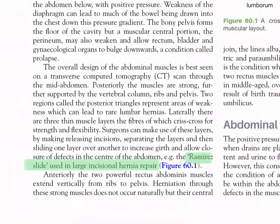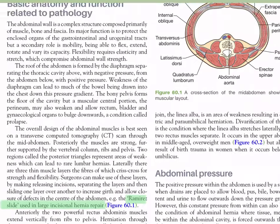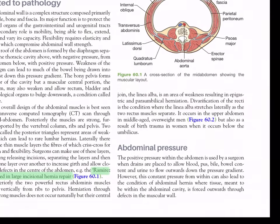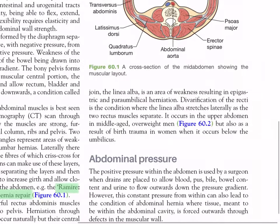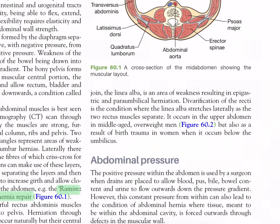In the center of the abdomen — for example the Ramirez slide used in large incisional hernia repair — anteriorly the two powerful rectus abdominis muscles extend vertically from ribs to pelvis. Herniation through these strong muscles does not occur naturally, but their central joint, the linea alba, is an area of weakness resulting in epigastric and paraumbilical hernias.